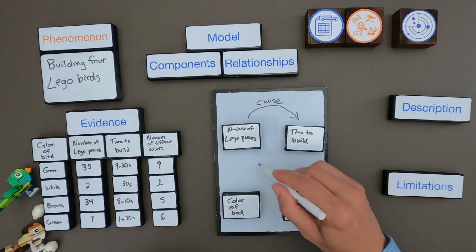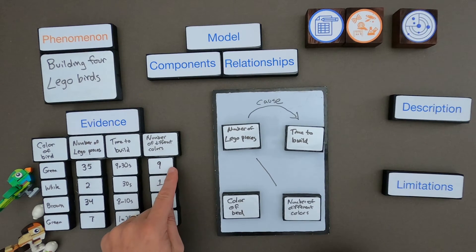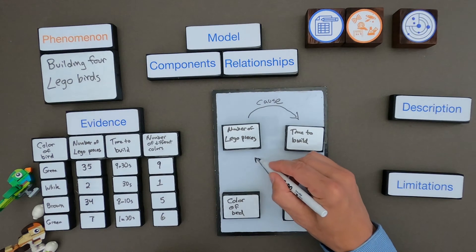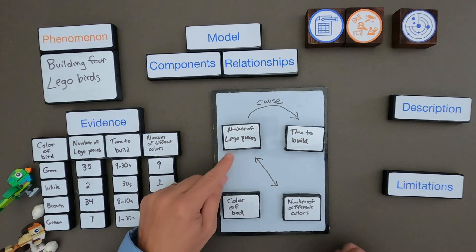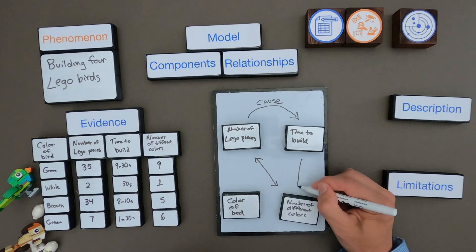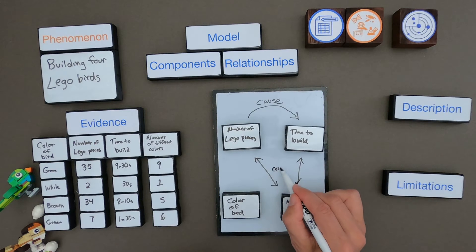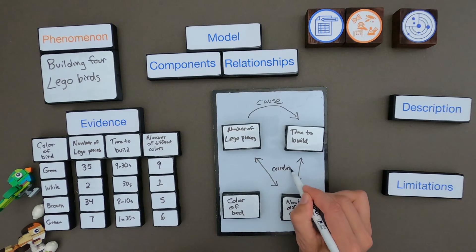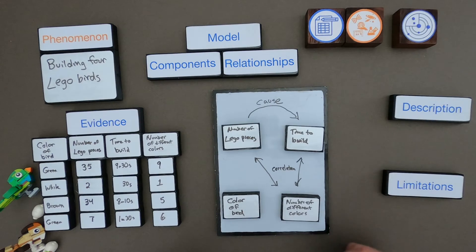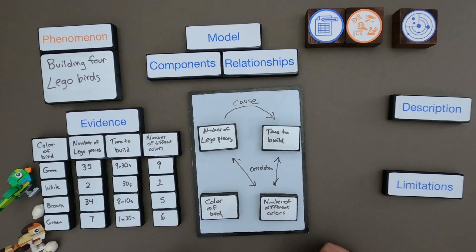Now let's look at the different number of colors. It looks like there is some kind of relationship — the more LEGO pieces there are, the more different colors there are. But I don't think you could change one and it would change the other. I think there is a correlation between the two, but I don't think one is causing the other. Remember, correlation does not imply causation. So now I have a model with the important components and I've shown how they're related.